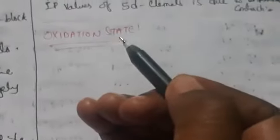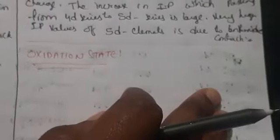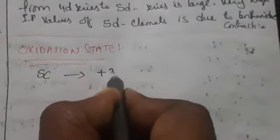Good morning students. Let us discuss about oxidation state. We have seen up to ionization energy. Now the oxidation state is going to be discussed for transition elements. Generally we are having different types, variable varieties of oxidation states. What are the oxidation states? If you take scandium, scandium is having oxidation state plus 3.